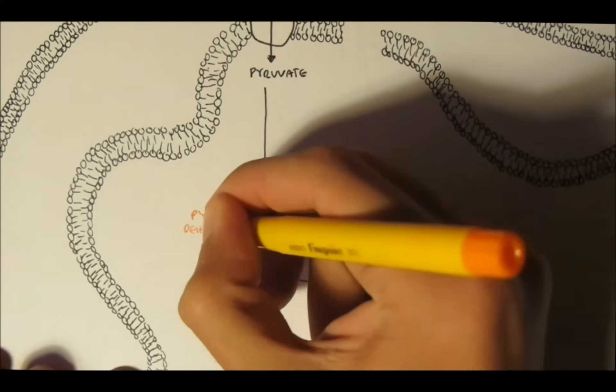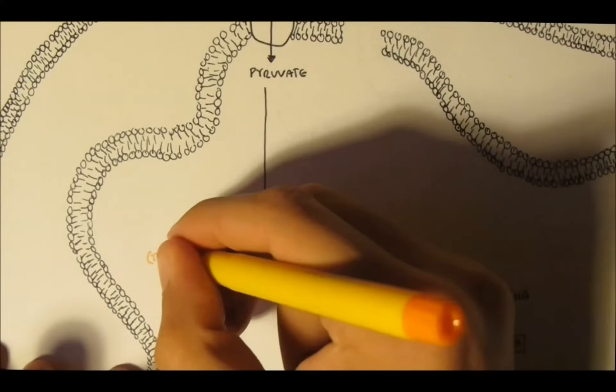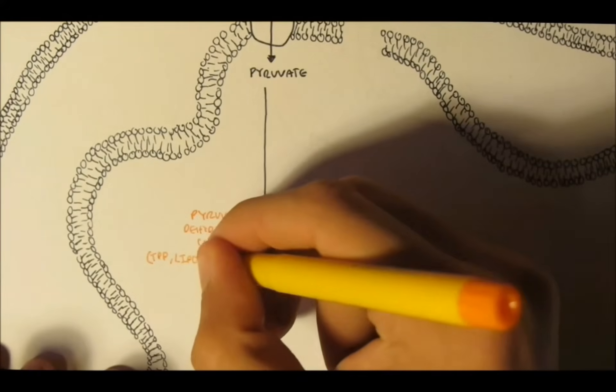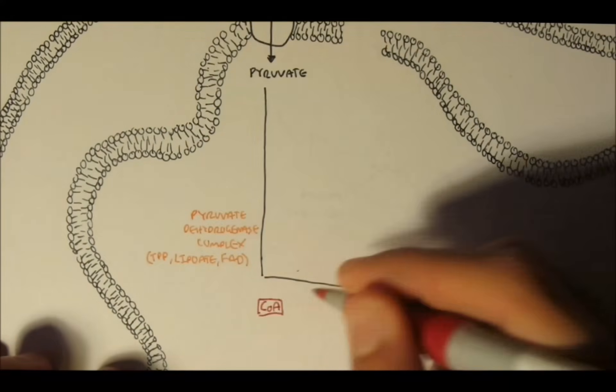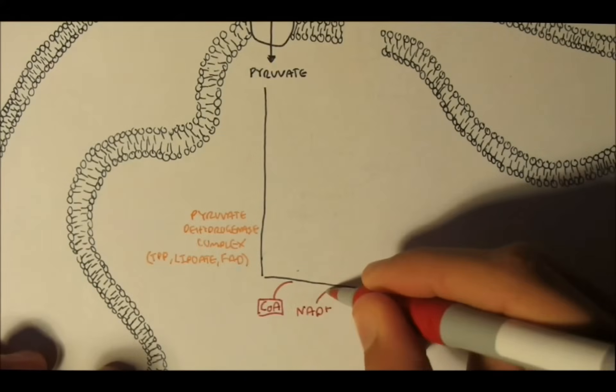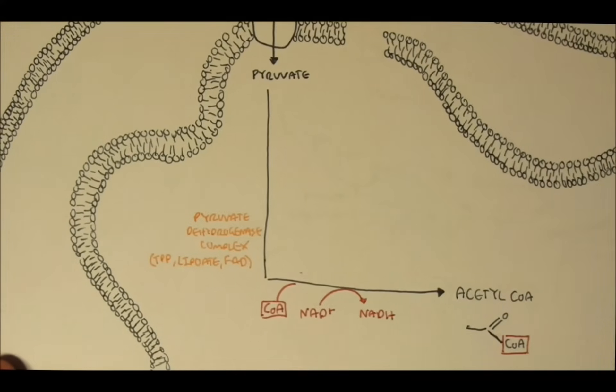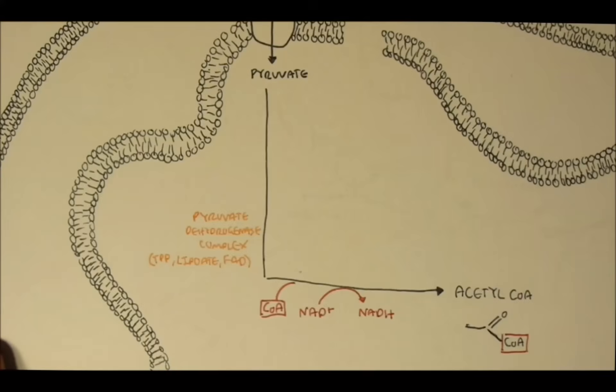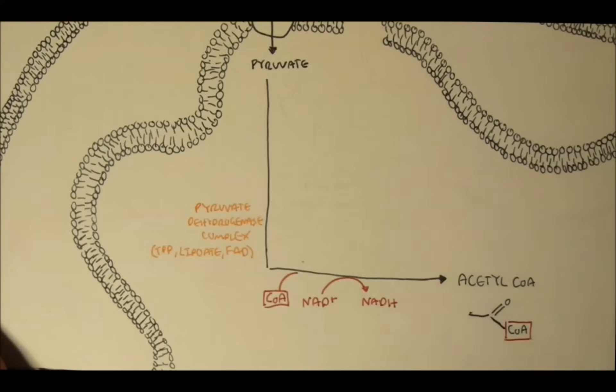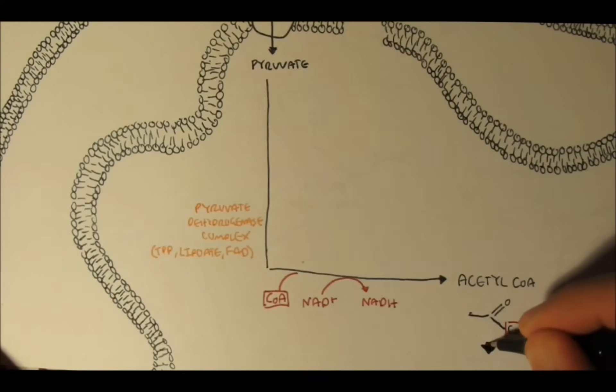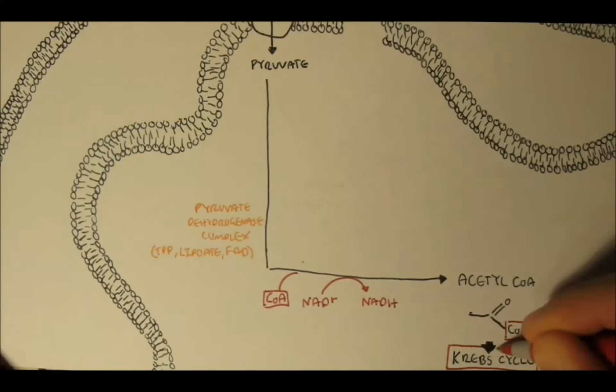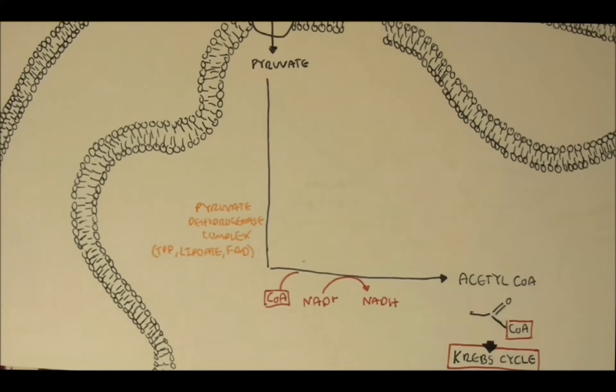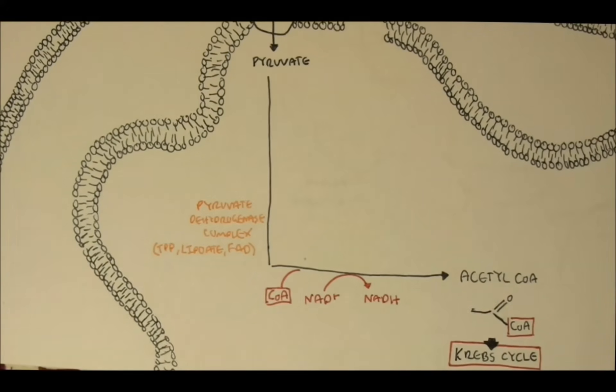Thiamine pyrophosphate, or TPP, lipoate, or lipoamide, and FAD, which is one of those electron carriers. Now, acetyl-CoA is an important metabolite and interconnects with almost everything. It is also important in fatty acid synthesis, which we will look at later on. But typically, acetyl-CoA will enter the Krebs cycle. And we won't go into Krebs cycle during these videos. Later on, we will probably. But for now, we will stop there.